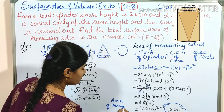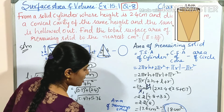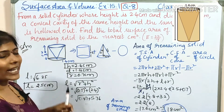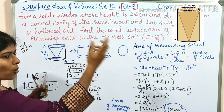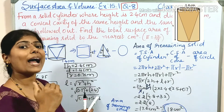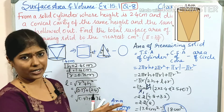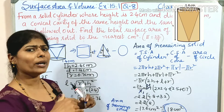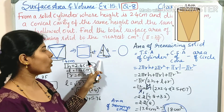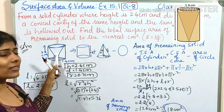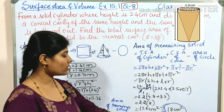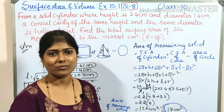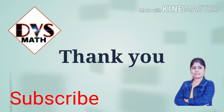The area of the remaining solid is 18 centimeter square. Key point: when anything is hollowed out, you add the curved surface area because the depression remains in that solid. Note that in volume problems we subtract, but in area we add, because the depression surface remains. The nearest area is 18 centimeter square. Thank you — for more videos, subscribe to my channel.